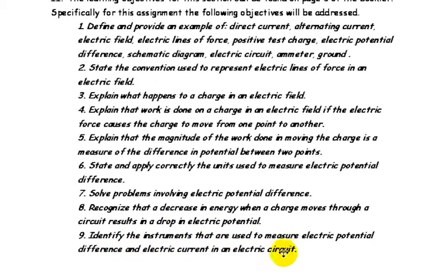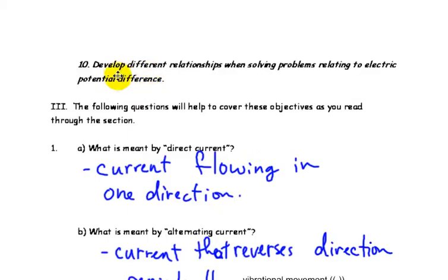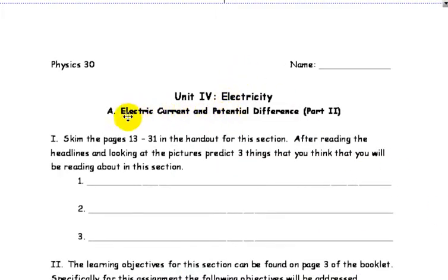Identify the instruments that are used to measure electric potential difference and electric current in an electric circuit. And lastly, develop the relationship with solving problems relating to electric potential difference. So, the last booklet dealt with electric current. We started off with charges and then ended off with electric current. This booklet looks more at potential difference.